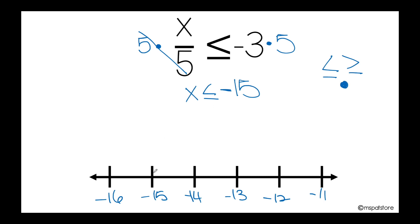So I'm going to show negative 15 right here with my closed circle. I need to think about what numbers are less than or equal to negative 15. Remember that on the negative side, numbers work like backwards — as they move away from zero, they become smaller and smaller. So negative 16, negative 17, negative 18, and so on are actually less than negative 15. So your arrow should be pointing towards this direction.